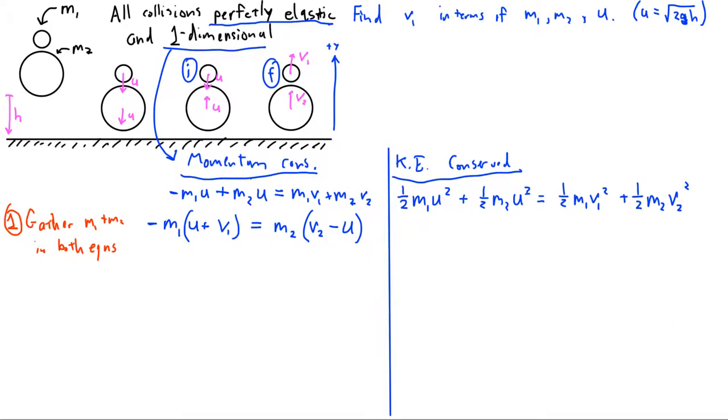For the kinetic energy equation, you do the same thing. I'm going to cancel out these one halves immediately because we have no use for them. You get M1U squared, subtract off M1V1 squared and bring it over. We've gathered the M1 terms on the left. We're going to gather the M2s on the right: V2 squared then minus U squared. Now we have both equations gathered up.